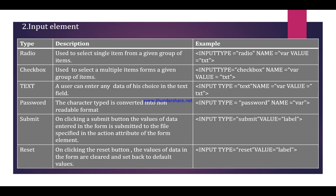Next is the input element. The name attribute specifies the name used for the field in the form. The value attribute specifies the default value of the field in the form. Input types include: radio, checkbox, text, password, submit, and reset. Radio is used to select a single item from a given group of items. Checkbox is used to select multiple items from a given group of items. Text allows the user to enter any data of their choice in the text field.